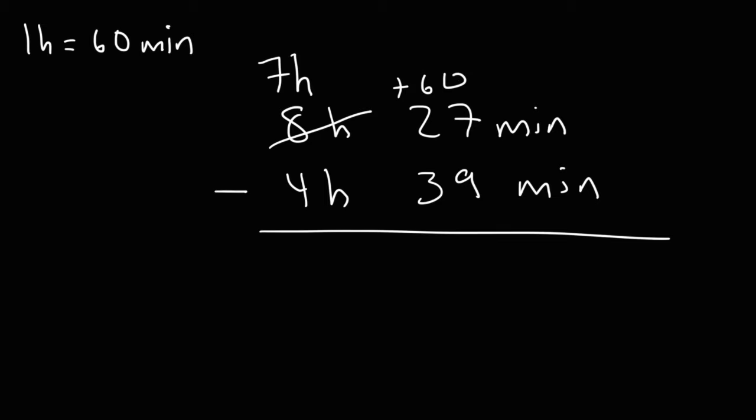So adding 60 to 27, it gives us a new number, which is 87. So now we need to subtract 87 by 39. So we can't really do 7 minus 9 because that, too, will give us a negative result. So we need to borrow a 1 from the 8, turning that into 7. And the 7 now becomes 17.